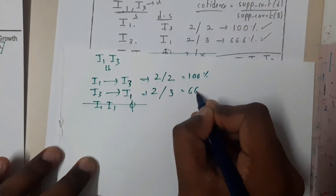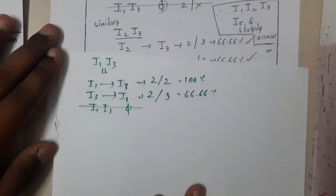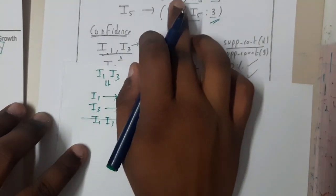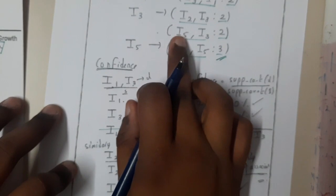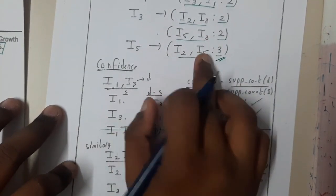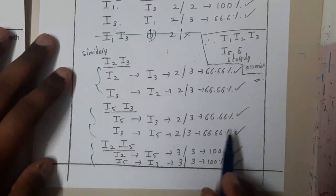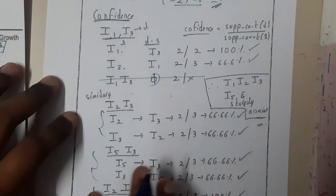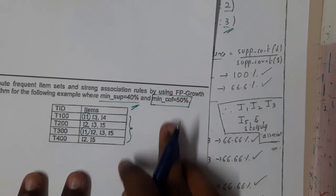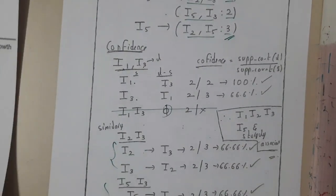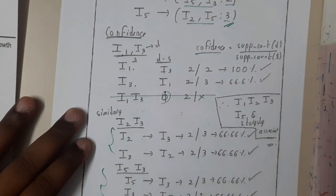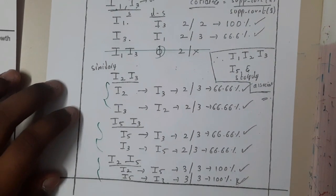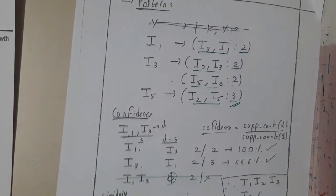Similarly you can continue for the remaining combinations such as i2∧i3, i2∧i5, and i5∧i3, and you will get the confidence scores. The question gave a minimum confidence of 50%, and in this situation all rules have satisfied it — we got 100% or 66.66%. I hope everyone now has a clear idea about the concepts of the Apriori algorithm and FP-Growth algorithm.